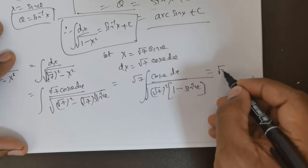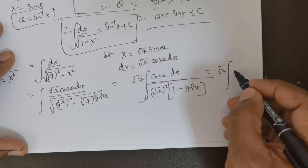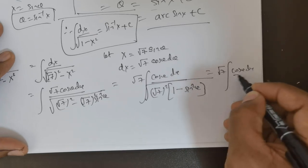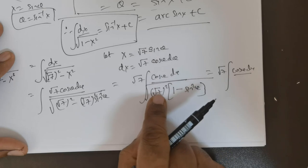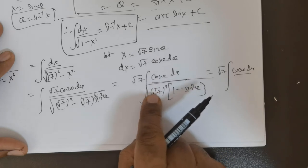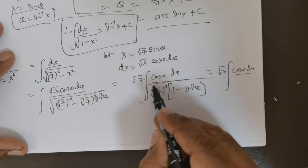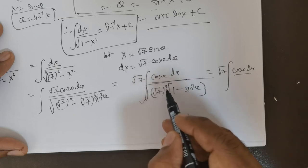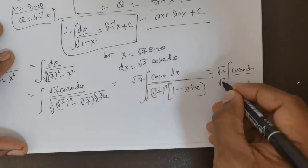Now this is further rewritten as root 7 times integral cos theta d theta divided by - if you bring root 7 squared outside, the square root function will remove the square, so you get root 7.